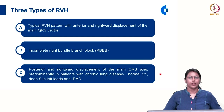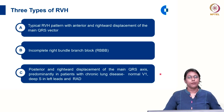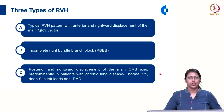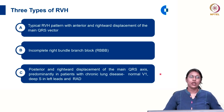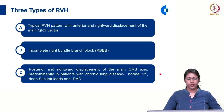Three types of right ventricular hypertrophy are identified. Type A is the typical RVH pattern with anterior and rightward displacement of the main QRS vector. Type B is where an incomplete right bundle branch block pattern is seen. Type C shows posterior and rightward displacement of the main QRS axis, seen predominantly in patients with chronic lung disease like emphysema, where V1 may look normal but a deep S wave is seen in left precordial leads with right axis deviation.